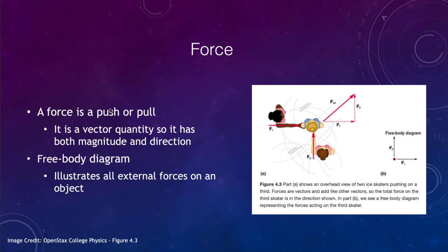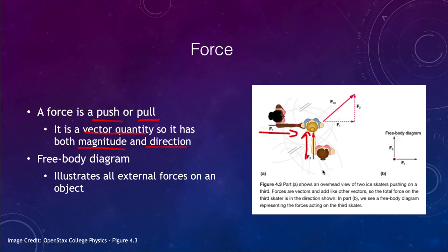What is a force? Well, we can think of it as a push or pull. But in physics, it is a vector quantity, meaning that it has a magnitude — how strong the force is — and a direction. We can see here in the diagram that F1 is pointing to the right with some strength, and F2 is pointing upward with some strength. So those are two different forces with different magnitudes and different directions.